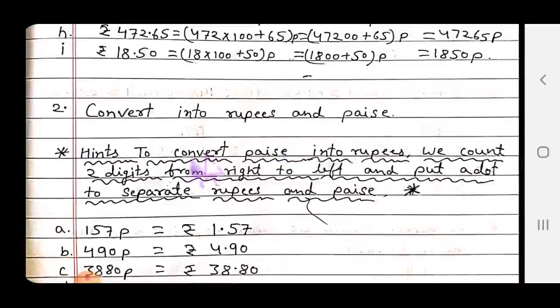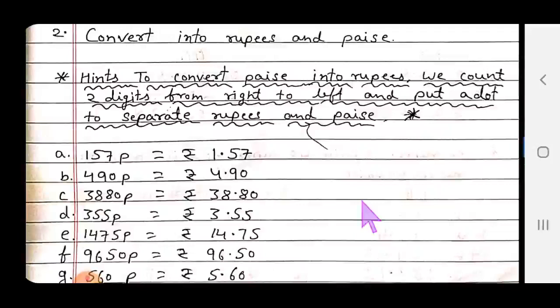Convert into rupees and paise. Hints: to convert paise into rupees, we count two digits from the right to left and put a dot to separate rupees and paise. I just explained - whatever paise is given, to convert to both rupees and paise, count two digits from the right side.